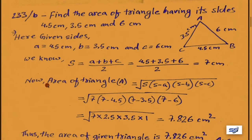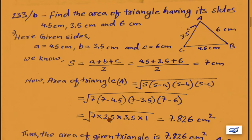Using Heron's formula, area equals root under s(s minus a)(s minus b)(s minus c). Substituting s equal to 7: root under 7 into (7 minus 4.5) into (7 minus 3.5) into (7 minus 6), which equals root under 7 into 2.5 into 3.5 into 1. The area of the given triangle is 7.826 centimeter square.